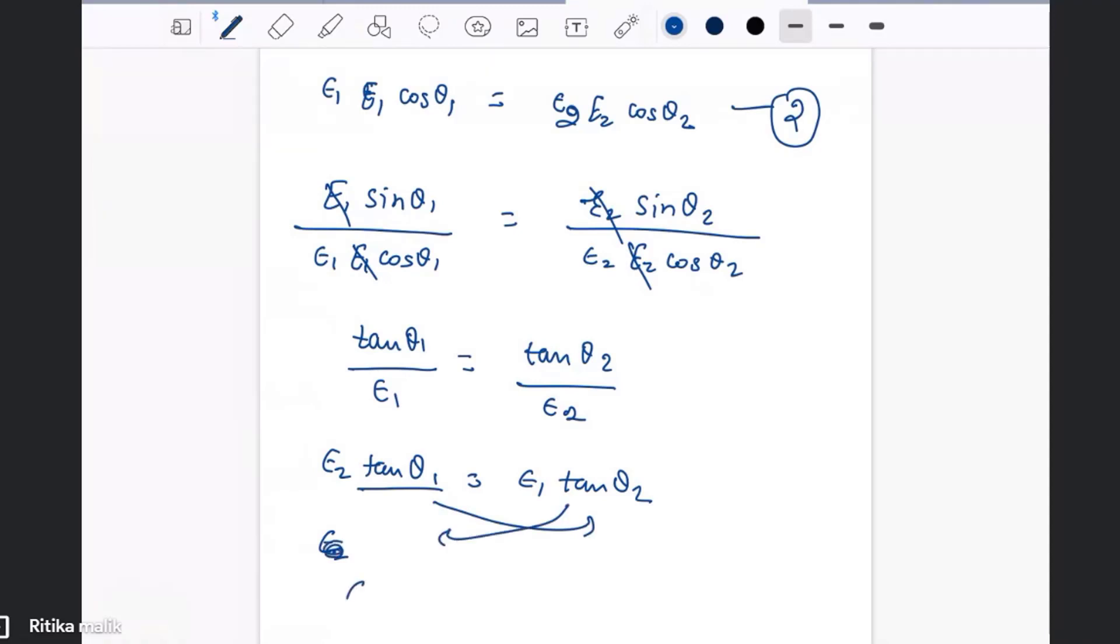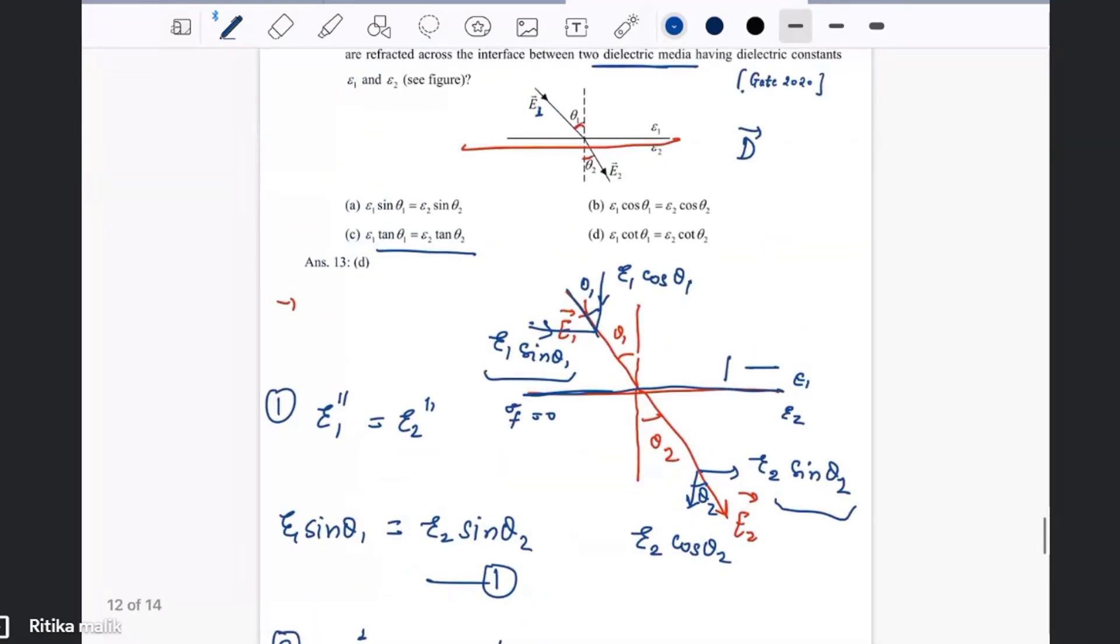So it will become epsilon 2 cot theta 2 equals epsilon 1 cot theta 1. I assume that you know that tan theta equals 1 upon cot theta, so this is the correct option.